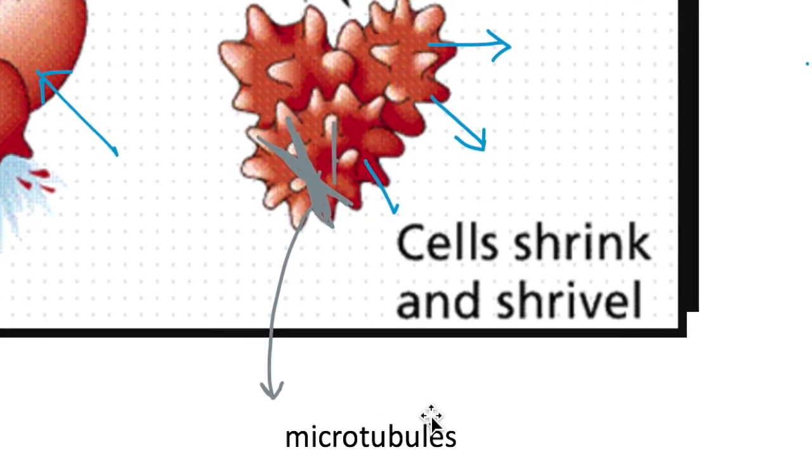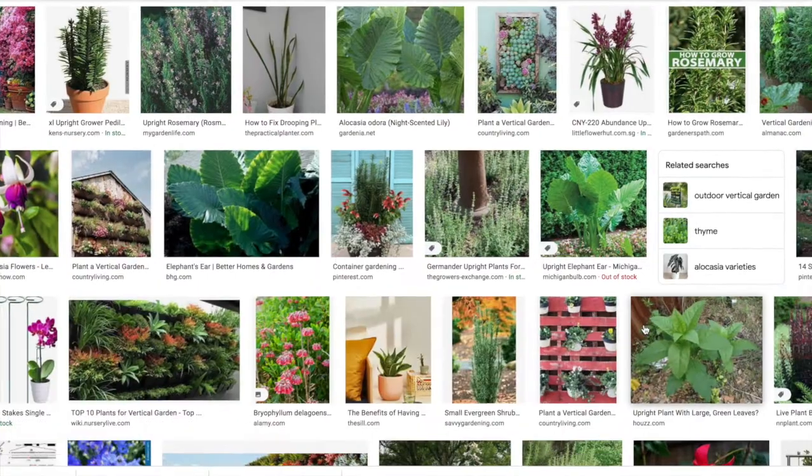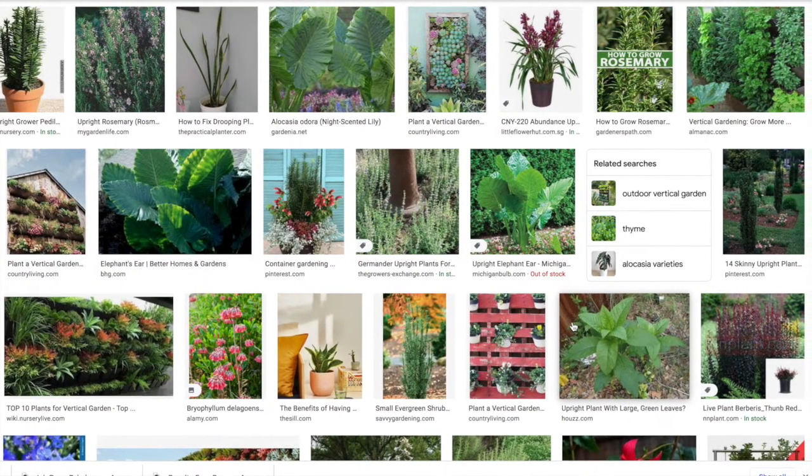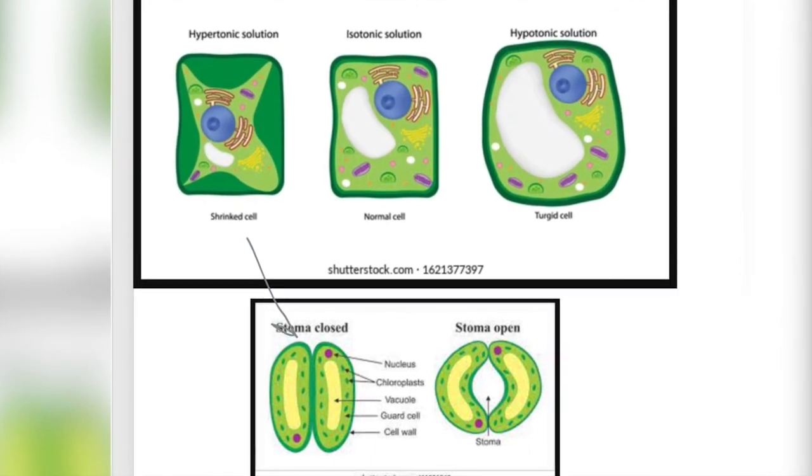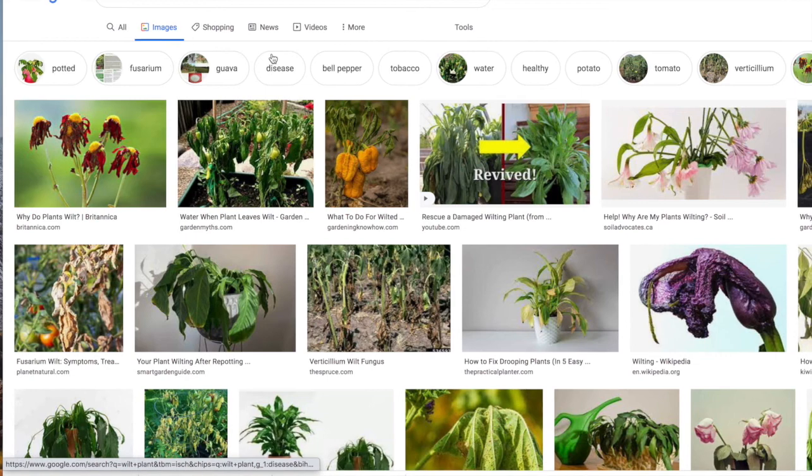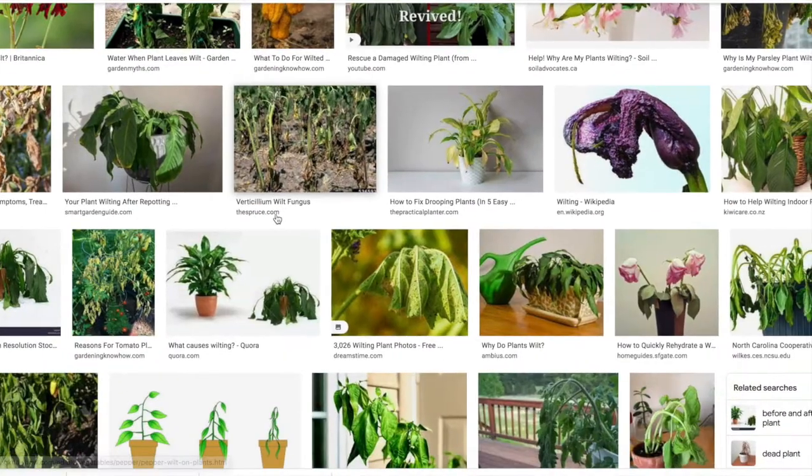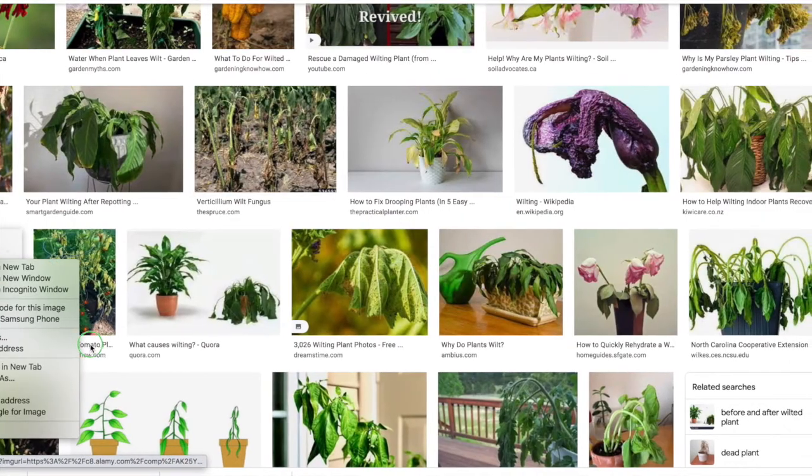Turgor pressure, as mentioned earlier, is important in plants because it helps them to keep upright and stay in shape. For leaves to receive maximum amount of sunlight, for flowers to bloom, for stomata to open so that gaseous exchange can take place. If they are limp or let's say they lose turgor pressure, the plant will undergo a wilting process.